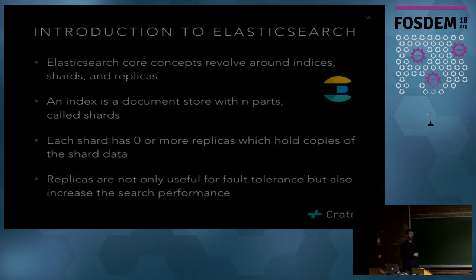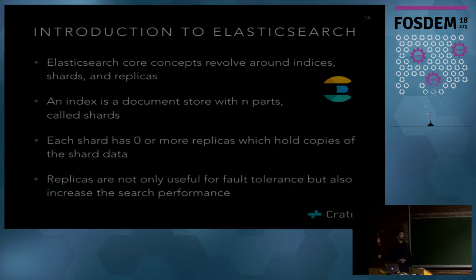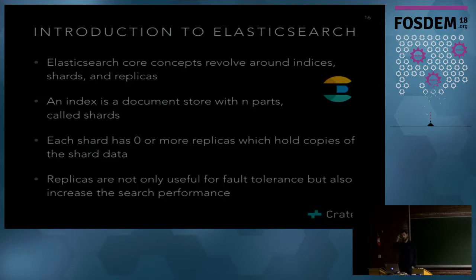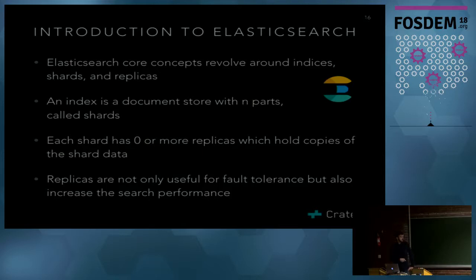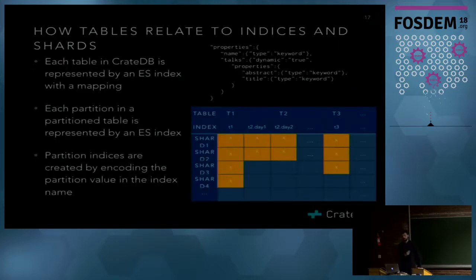Who has worked with Elasticsearch? In Elasticsearch the core concepts revolve around indices, shards, and replicas — there was a good talk yesterday that explained this. We have shards in an index as I mentioned, each shard has replicas, and replicas are also useful for search performance. So how do tables relate to indices and shards in CrateDB?